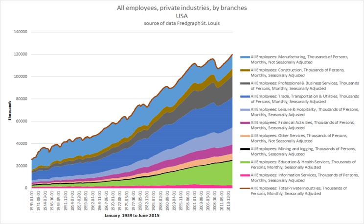Employment is a relationship between two parties, usually based on a contract where work is paid for, where one party — which may be a corporation, for-profit, not-for-profit organization, cooperative or other entity — is the employer and the other is the employee. Employees work in return for payment, which may be in the form of an hourly wage, by piecework or an annual salary, depending on the type of work an employee does or which sector she or he is working in.